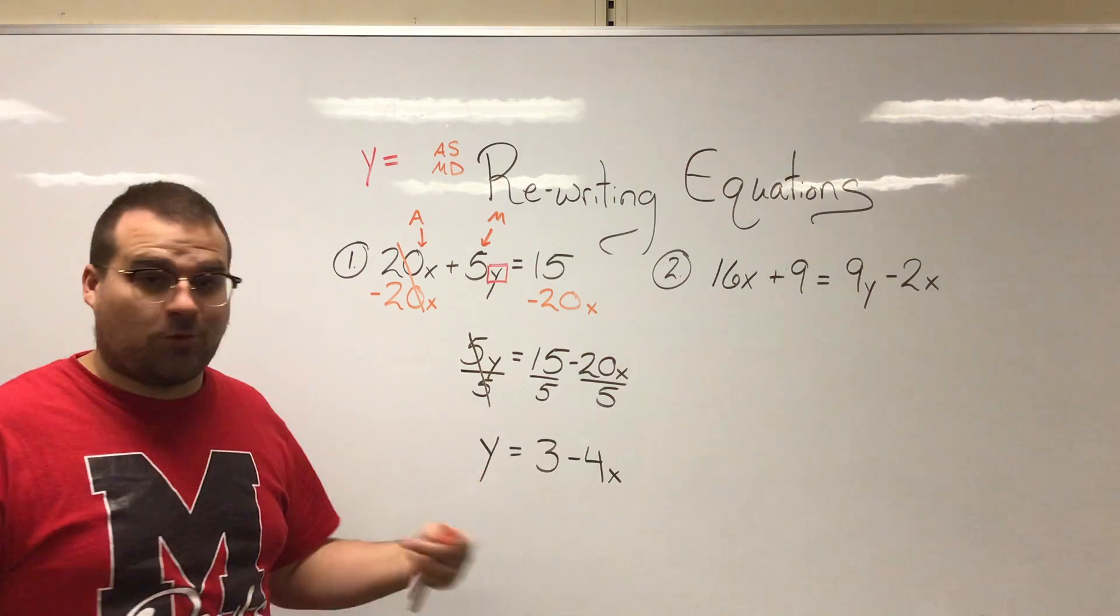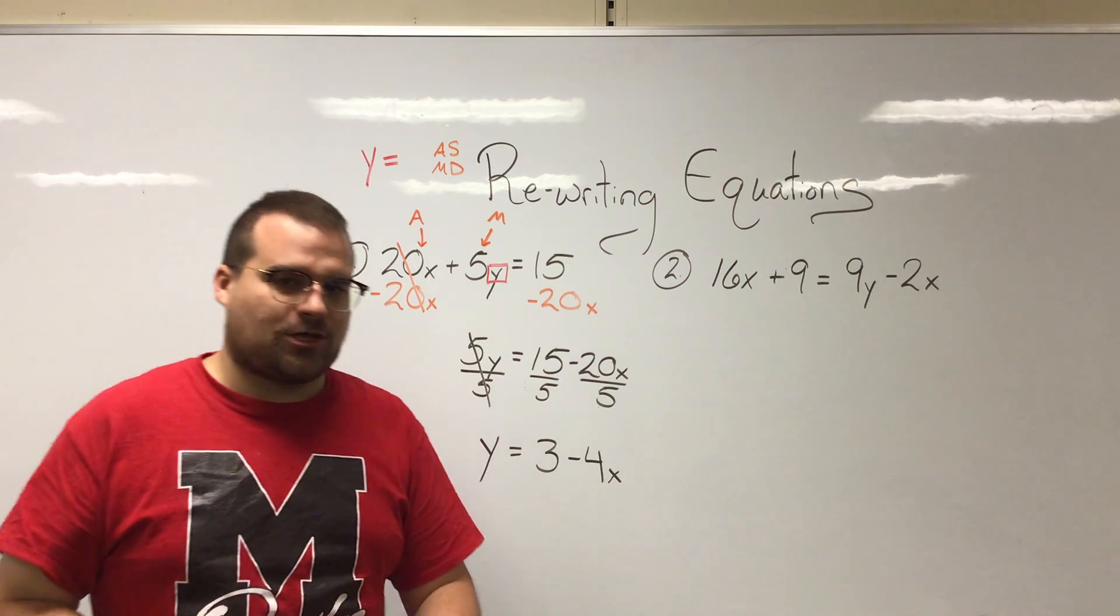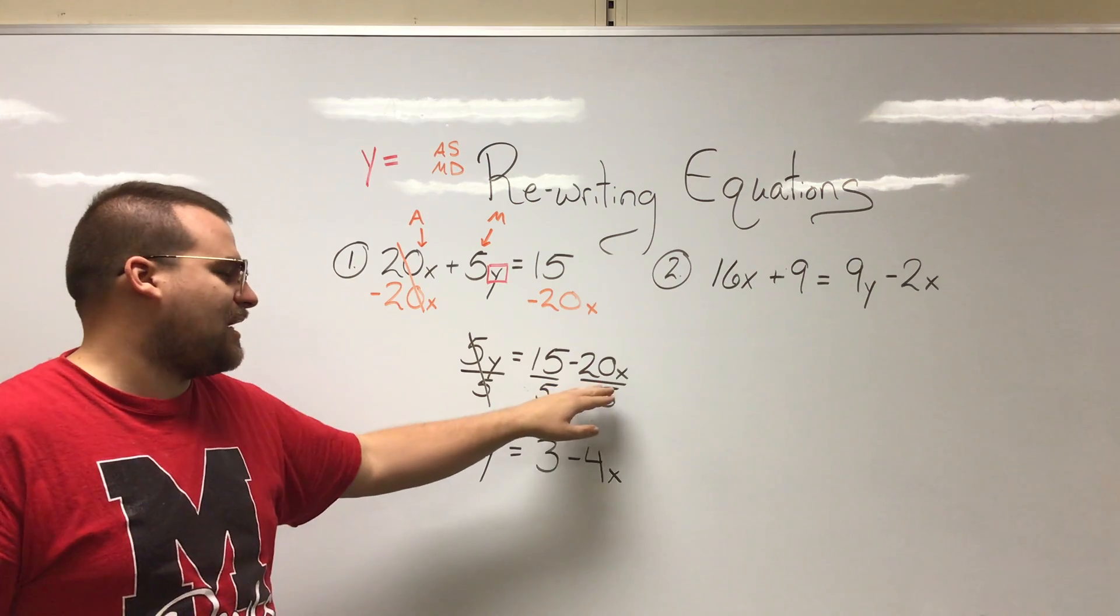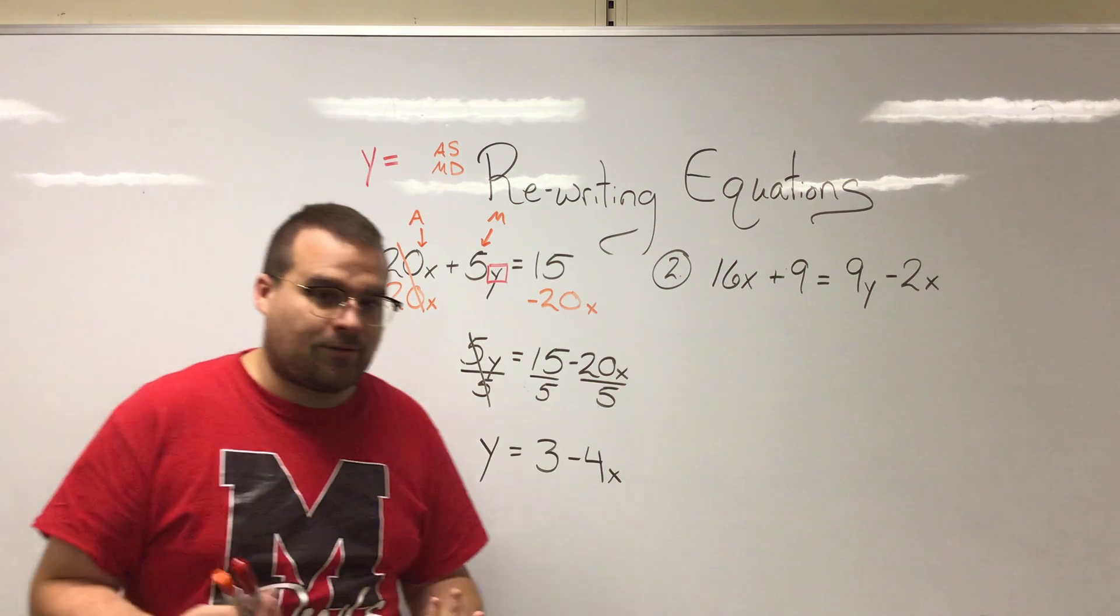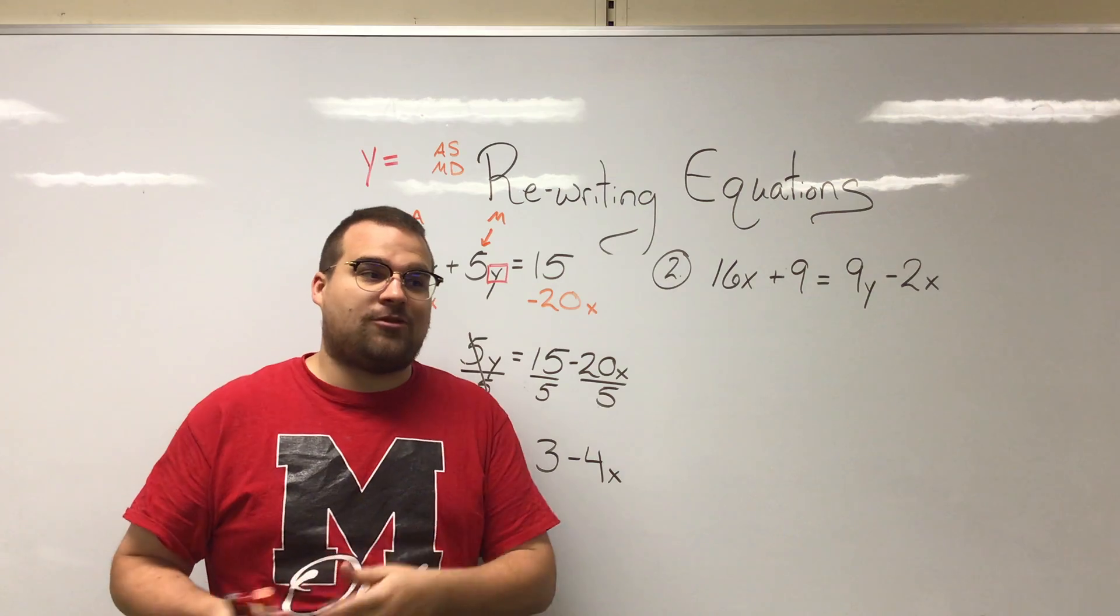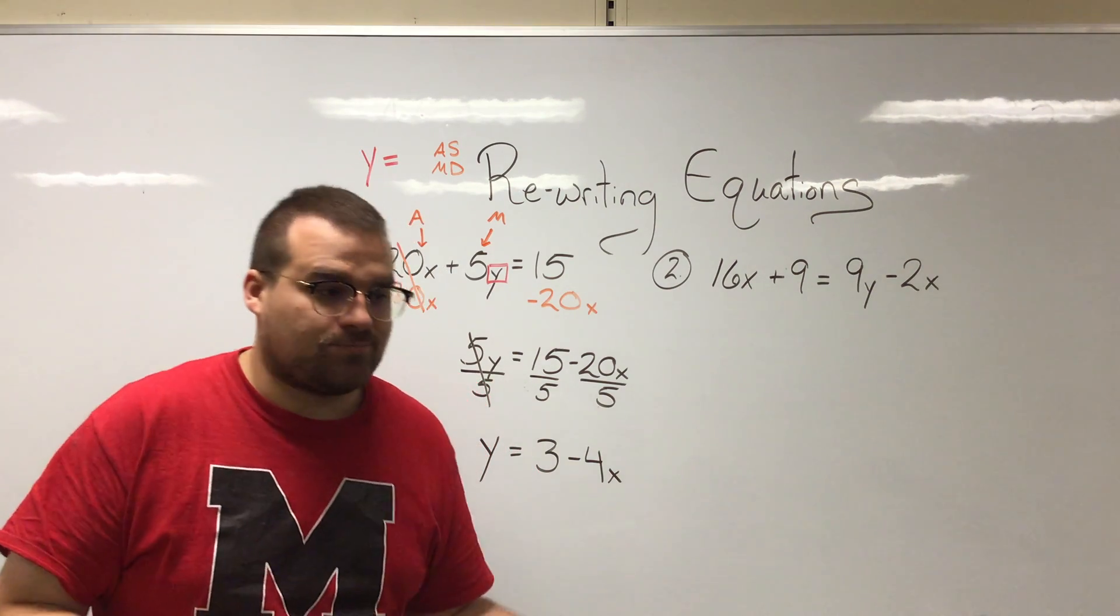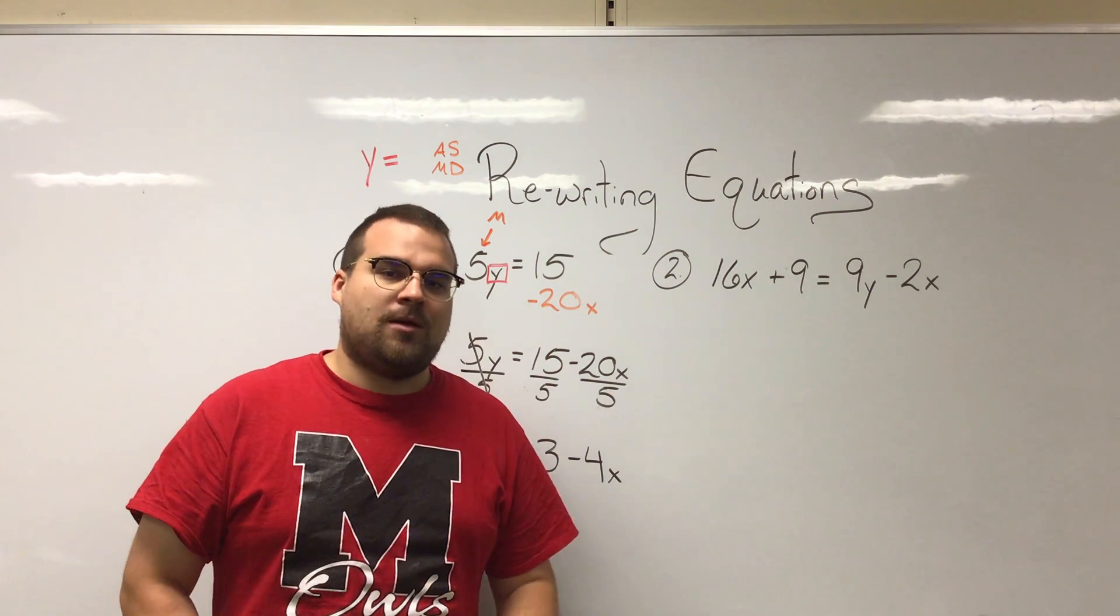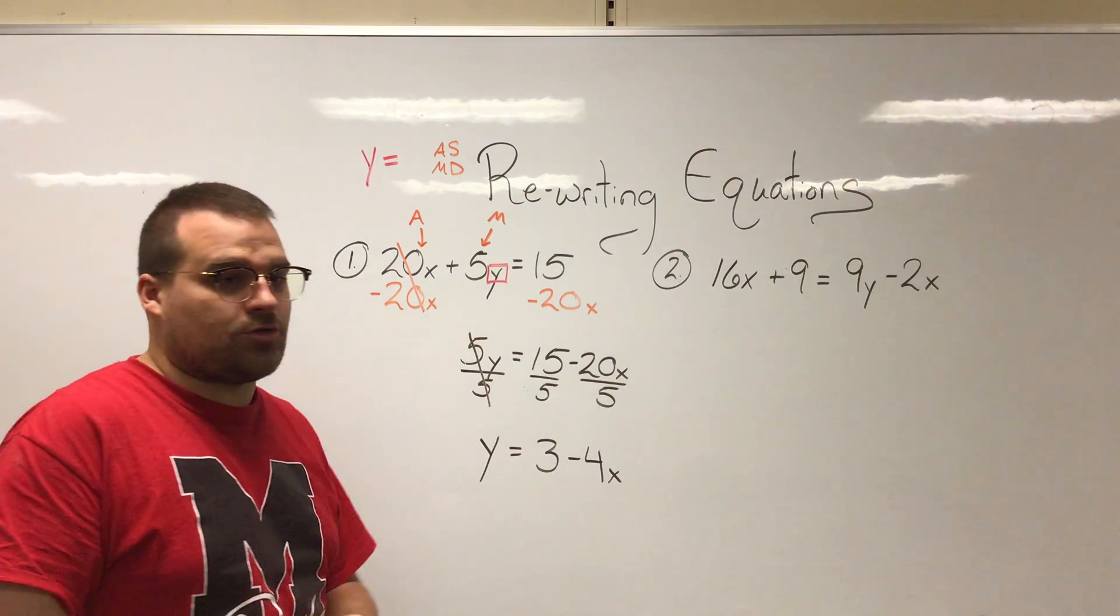That looks a lot better than this whole thing over 5. So that's something you have to ask yourself sometimes. When I divide this side by whatever number was in front of the y in this case, can those numbers actually divide? If it's like a 7 and a 3, no. It's just going to stay like it is, that whole thing over the number. But in a problem where they can, we want to do so.